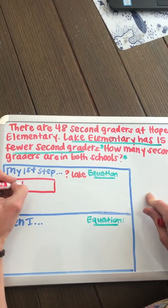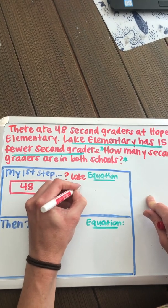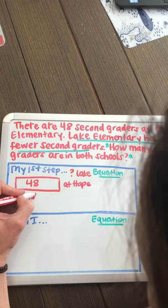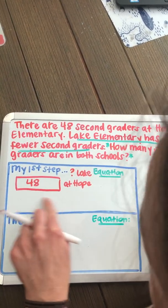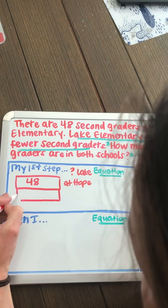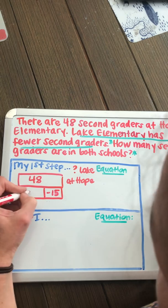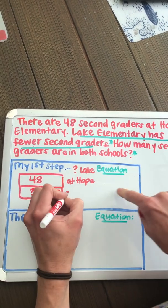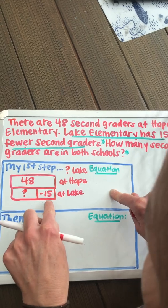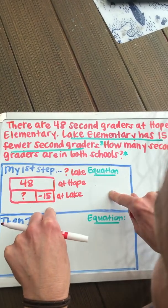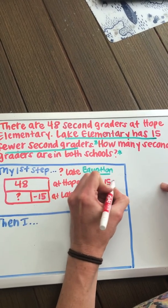So let's use what I know. Right now I know that there are 48 second graders at Hope. I know that there are 15 fewer. Let's draw it this way — 15 fewer at Lake. So I know that 15 less are at Lake than at Hope. My equation is going to be 48 minus 15.